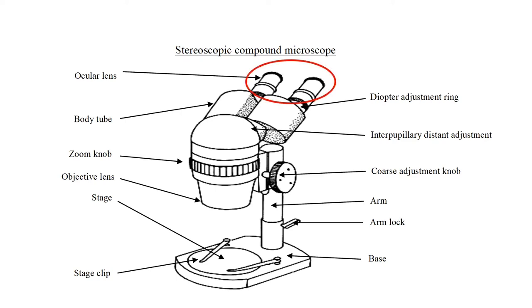This is ocular lens, objective lens, stage and stage clip, coarse adjustment knob, zoom knob, base and arm.